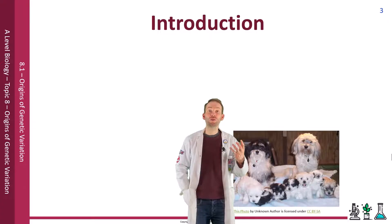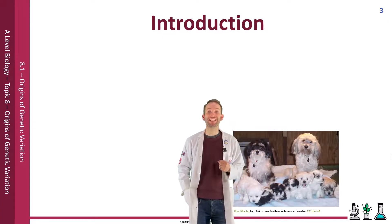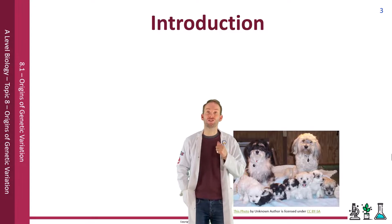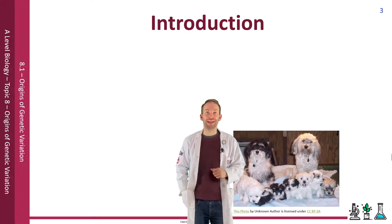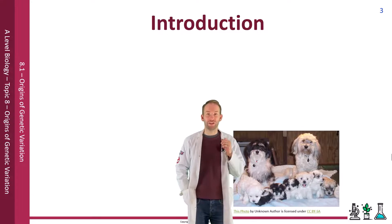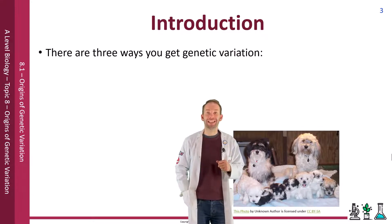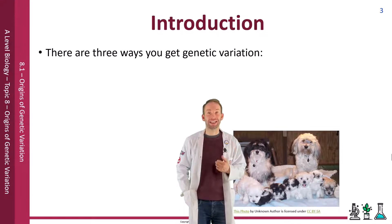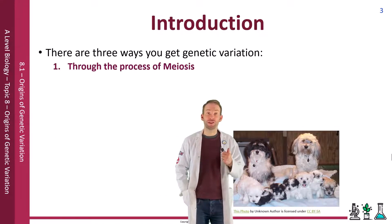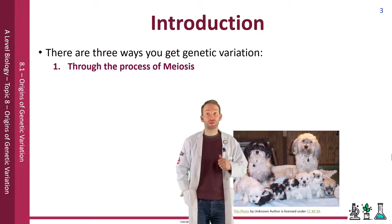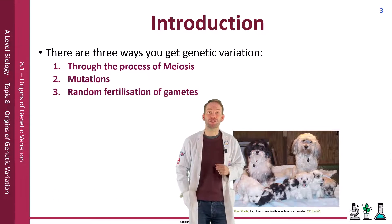In order for the survival and evolution of species, you need new versions and combinations of genes. This is called genetic variation, and there are three ways this typically happens: through the process of meiosis, through mutations, and through random fertilization of gametes.